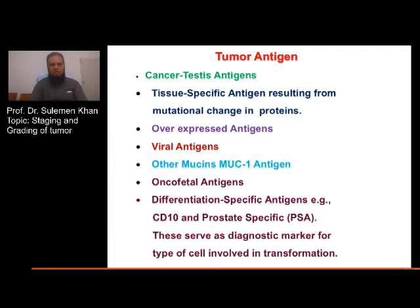The first defense against tumors involves tumor antigens. These include cancer-testis antigens, tissue-specific antigens resulting from mutational changes in proteins, overexpressed antigens, viral antigens, other mutations, MUC1 antigen, oncofetal antigens, differentiation-specific antigens such as CD10 or PSA — prostatic-specific antigen. These serve as diagnostic markers for the type of cell involved in transformation.